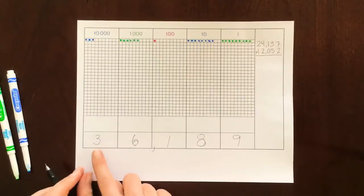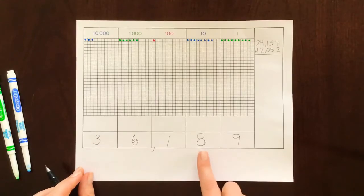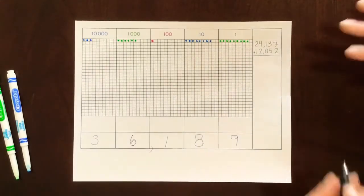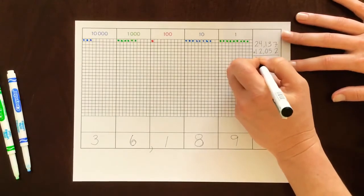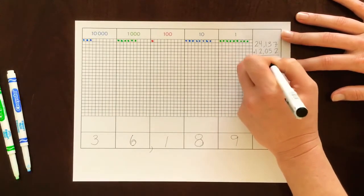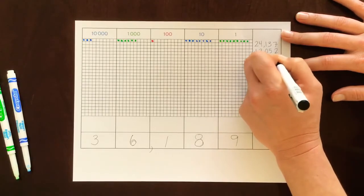Okay so our answer is thirty six thousand one hundred eighty nine. And we can transfer that over here. Thirty six thousand. Oh, this pen is dying. One hundred eighty nine.